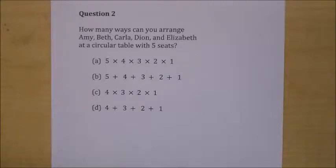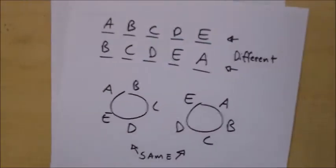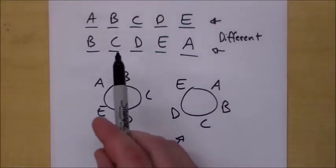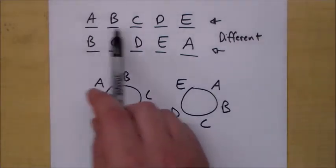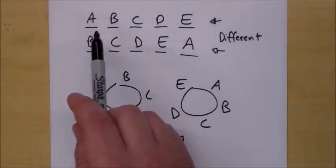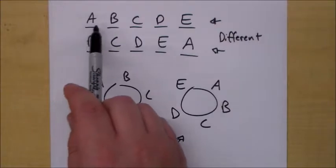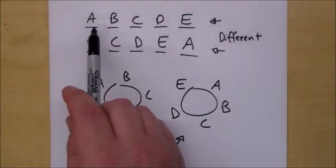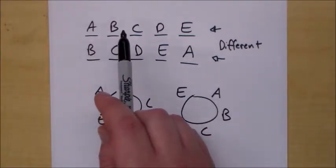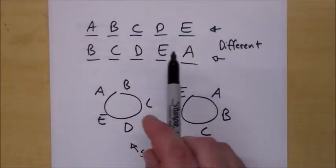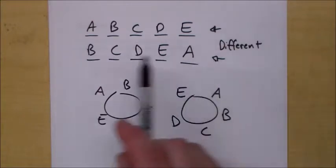Question two: how many ways can you arrange Amy, Beth, Carla, Dion, and Elizabeth at a circular table with five seats? We just did this problem, but here's the difficulty. In a straight line, the first person matters. If you flip everyone down one spot, B who used to be in the middle is now at the end, and A is next to E — that's a different order.